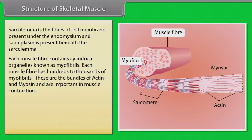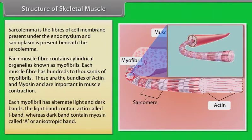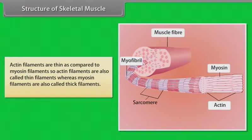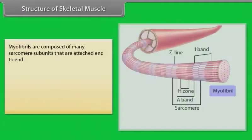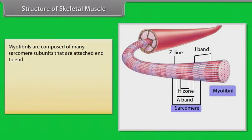Each muscle fiber contains cylindrical organelles known as myofibrils, numbering in the hundreds to thousands per fiber. These are bundles of actin and myosin important in muscle contraction. Each myofibril has alternate light and dark bands: light bands contain actin and are called I-bands, while dark bands contain myosin and are called A-bands or anisotropic bands. Actin filaments are thin filaments and myosin filaments are thick filaments.